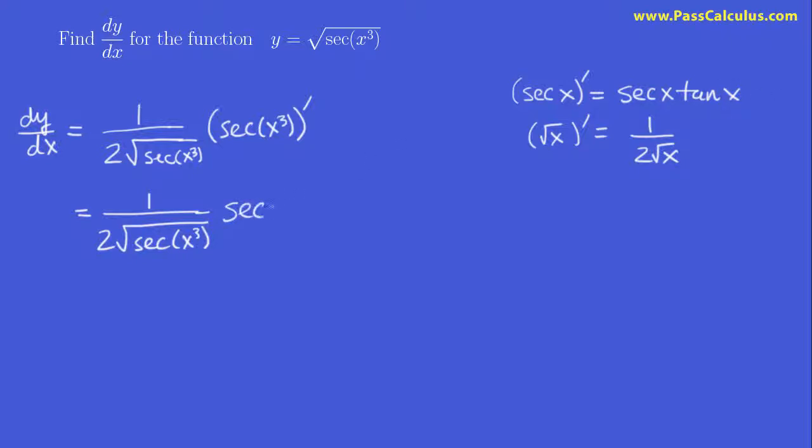So it'll be secant of x cubed times tan of x cubed times the derivative of x cubed. Now, I could write x cubed prime and then rewrite everything and then write the derivative on the next step. But the derivative of x cubed is so easy, let's just write it down right away. So it's 3x squared. And really, we're done now. There's no more prime signs, so we've done the derivative.